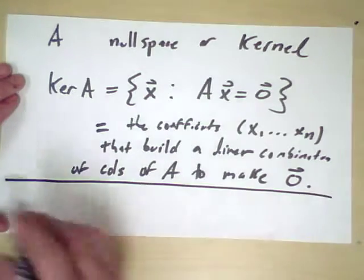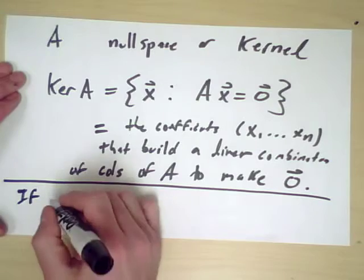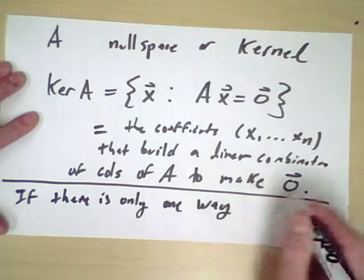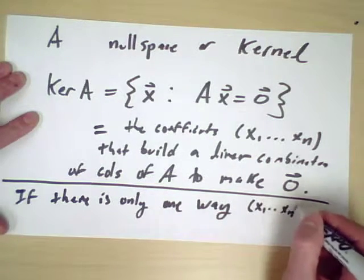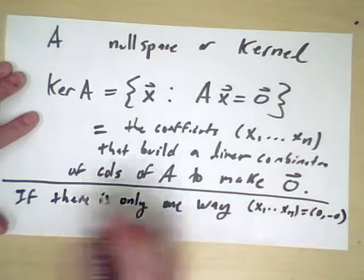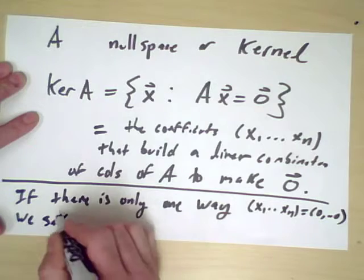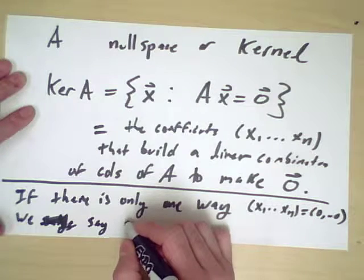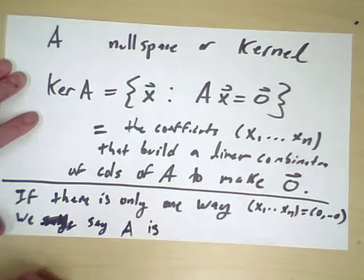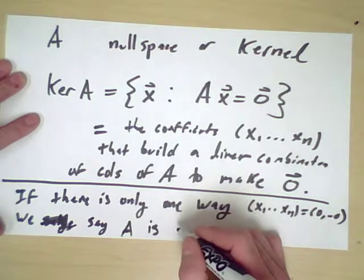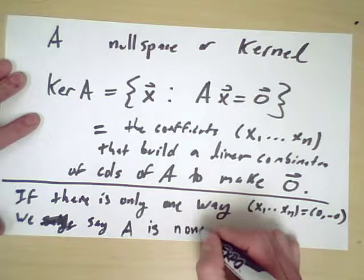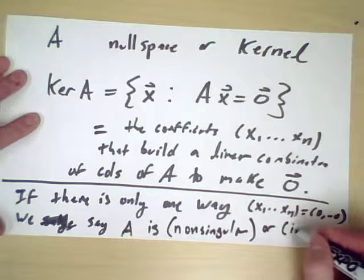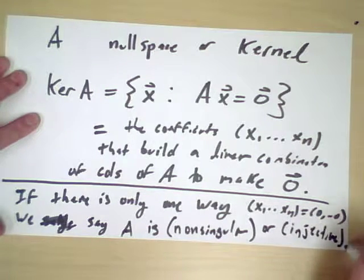Of course, something you know is that if there is only one way, namely x_1 through x_n equals all 0s, we say that A is non-singular if it's a square matrix, or more generally we just say injective for a non-square matrix.